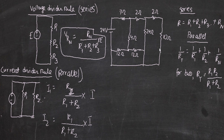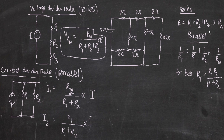After doing this example, your understanding should be clearer. We already know the formulas for series and parallel from earlier grades. When there are just two resistors in parallel, we use R_T = (R1 × R2) / (R1 + R2). When there are more resistors in parallel, we use 1/R_T = 1/R1 + 1/R2 + ... + 1/Rn. For series, it's simplest — just add all the resistances.